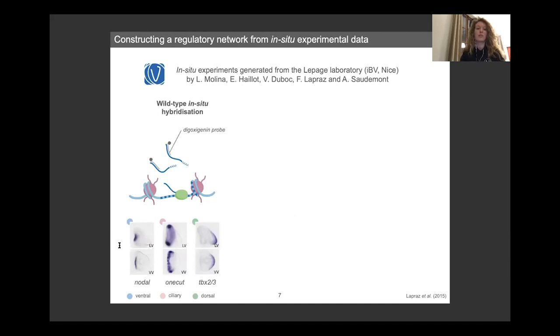taking three markers that are known to be specific to each of the three territories I have mentioned, we can see their patterns specifically. For example, nodal is a ventrally expressed TGF-beta transcription factor. We have one-cut, which is a ciliary marker and TBX2-3, which is a dorsal marker, as you can see here.